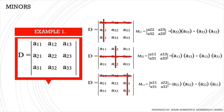Para sa minor ng a22 at a13, same process lang kagaya ng sinabi ko kanina. I-delete ang entire row at column kung saan ito nakalagay, at kung ano yung natitirang elements, yun ang magiging minor.